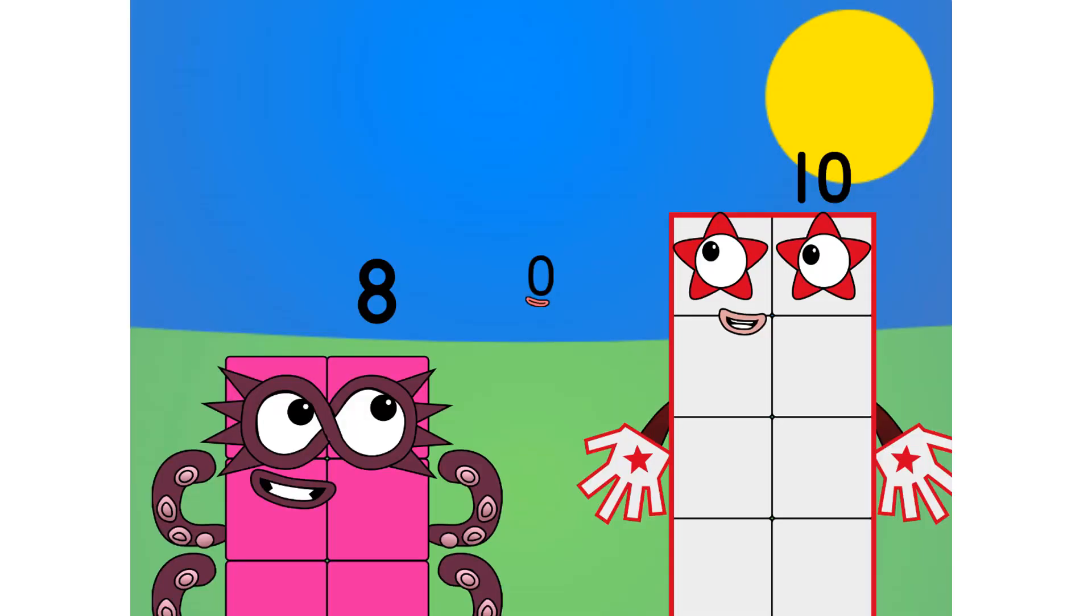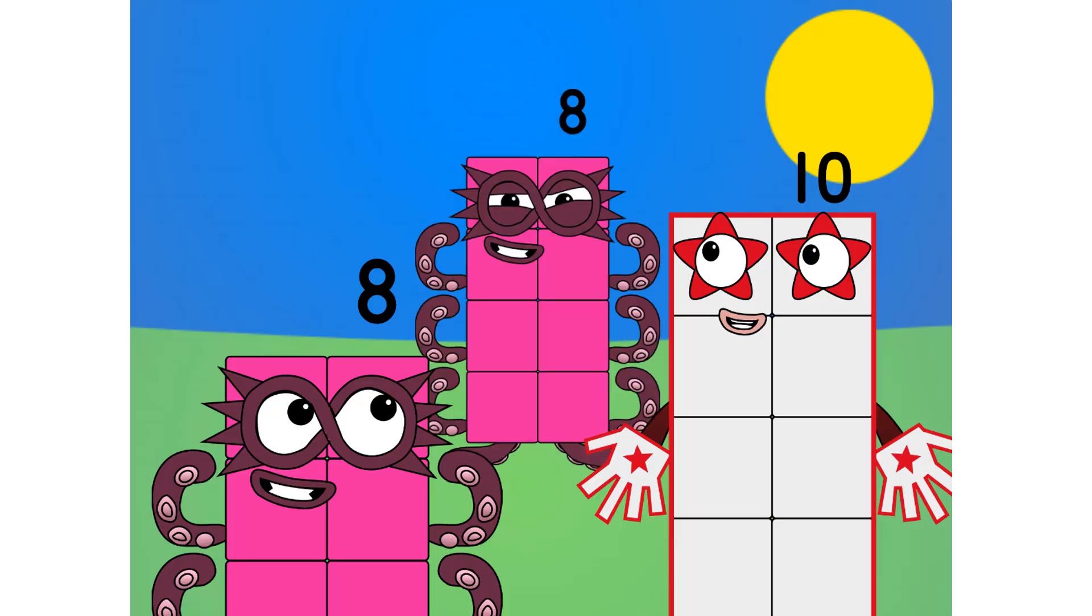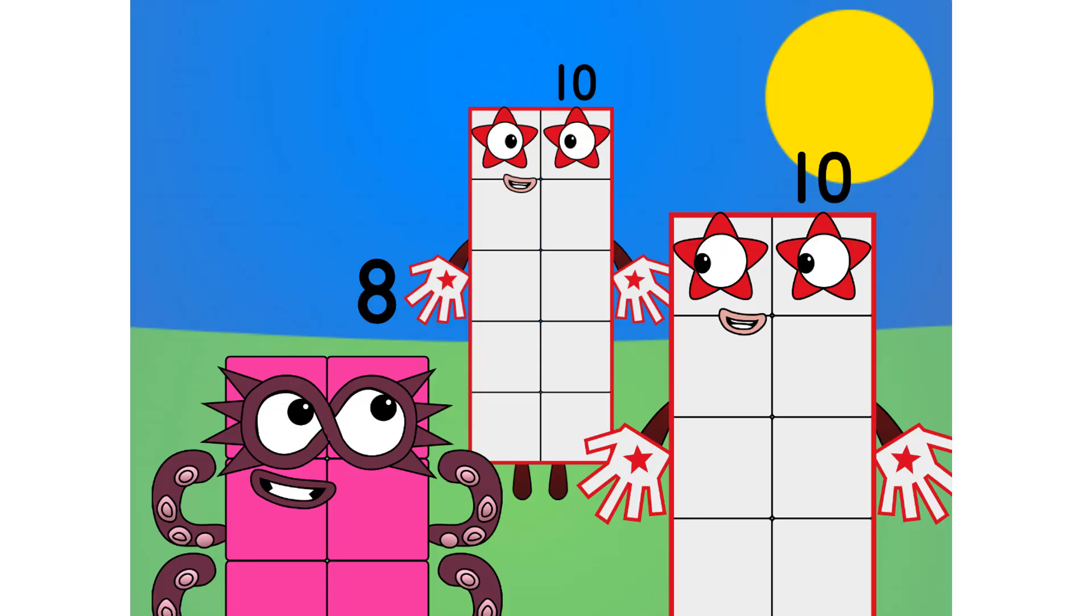8, do you know why we count up to 10? No. Well, the main reason why we count to 10 is because humans have 10 fingers, 5 on each of their two hands. 1, 2, 3, 4, 5, 6, 7, 8, 9, 10? See? 10 numbers, 10 fingers.